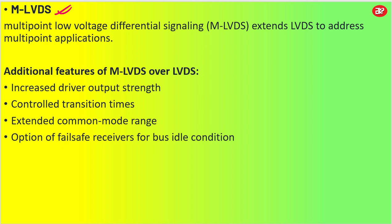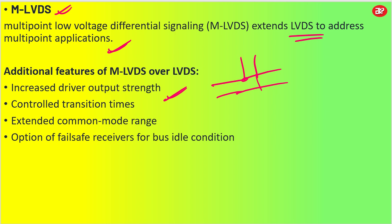Talking about MLVDS: MLVDS is nothing but LVDS, but it has multipoint — multipoint low voltage differential signaling — which extends LVDS to address multipoint applications. The additional features of MLVDS include increased driver output strength, meaning it will have a lot of fan-out where one driver output can give you different signaling outputs. It also has controlled transmission times, extended common mode range, and an option for failsafe receiver for bus idle conditions — so if the bus is idle and there is a failure, it has failsafe options.